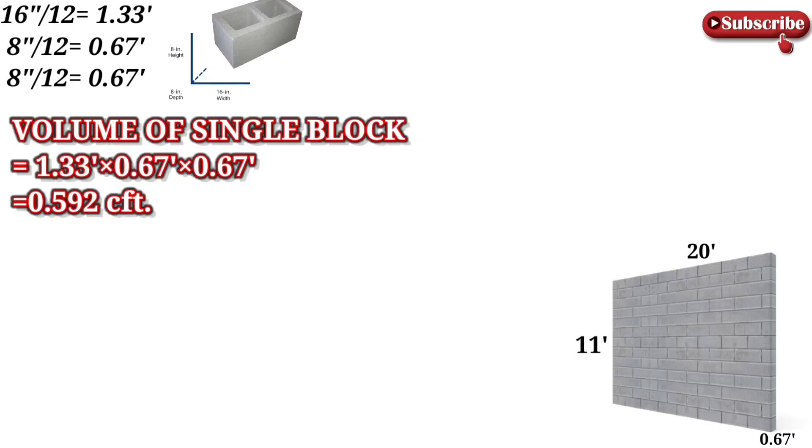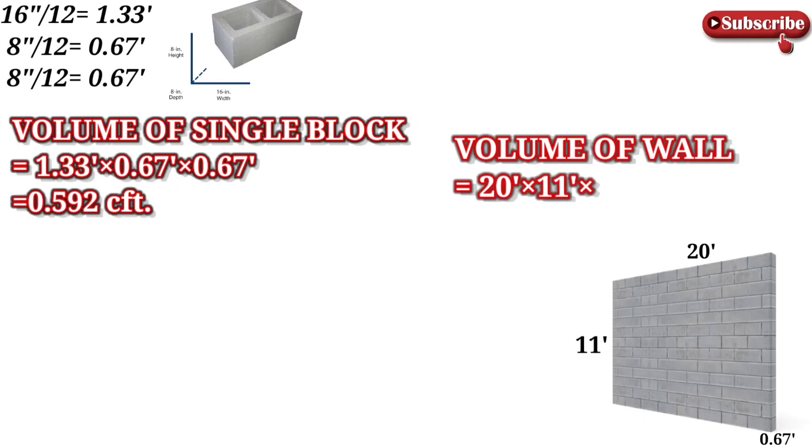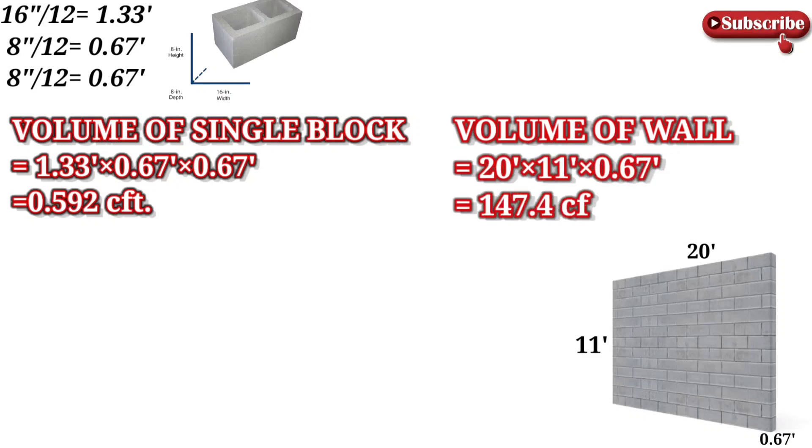After that, we will find the volume of that particular wall for which we are finding the number of concrete blocks. The dimensions are given, so we can find its volume easily. 20 feet multiplied by 11 feet multiplied by 0.67 feet gives 147.4 cubic feet.